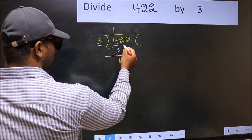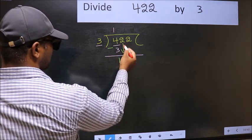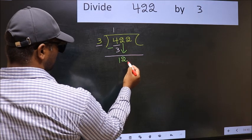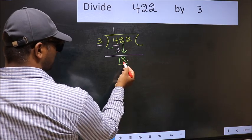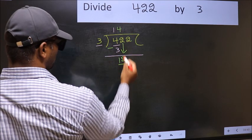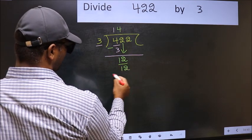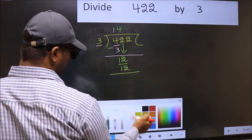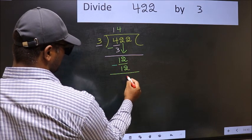After this, you should bring down the beside number. So 2 down. Now 12. When do we get 12 in the 3 table? 3 fours, 12. Now you should subtract. 12 minus 12, 0.